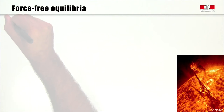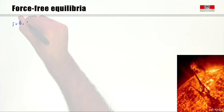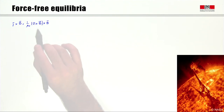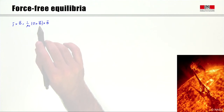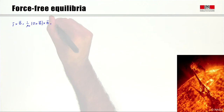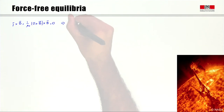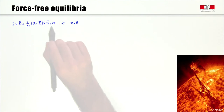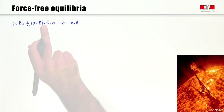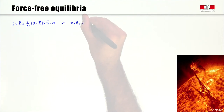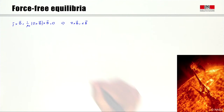Force-free equilibria are equilibria for which J cross B equals zero, which using Ampere's law means (curl B) cross B equals zero. In other terms, force-free equilibria appear when the curl of B is parallel to B. In this case the vectorial product is zero. Therefore, curl of B must equal some scalar function alpha times B.